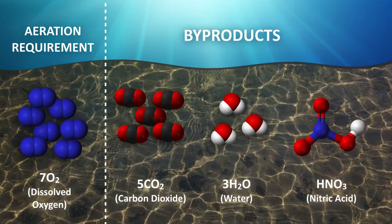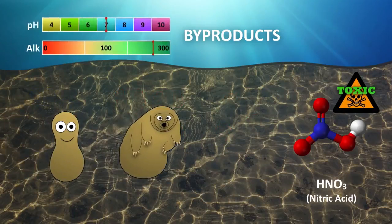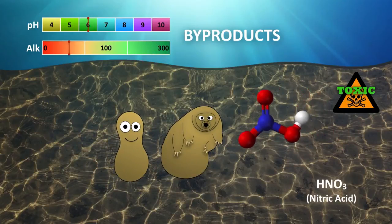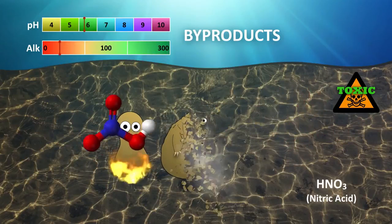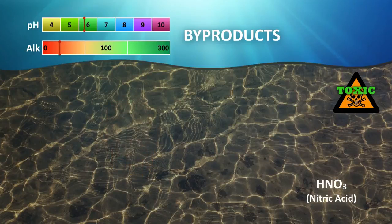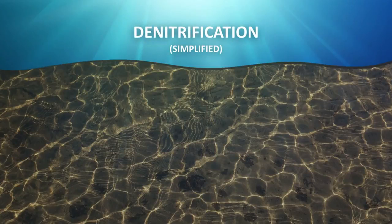Consequently, nitric acid is a very strong acid and can kill the biomass because microorganisms are very sensitive to pH conditions. In order to reduce nitric acid in the process, the denitrification process must occur.